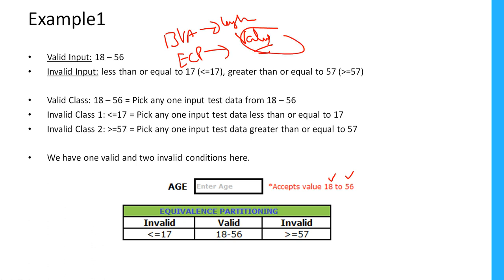Boundary value analysis is focusing on the length and equivalence class partitioning is mostly focusing on the value. Here I am talking about the value which we are providing inside this particular field. This field accepts the value which is between 18 to 56.